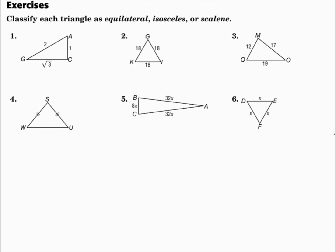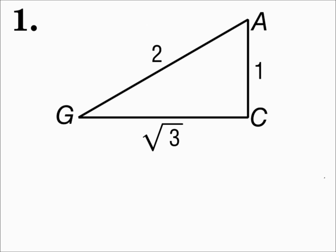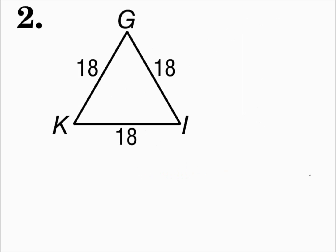Classify each triangle as equilateral, isosceles, or scalene. Number one — look at the side lengths. They're all different, and when they're all different, it's a scalene triangle. Number two — all sides are the same length, so it's equilateral.